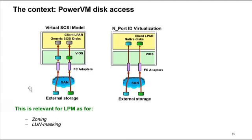NPIV virtualization actually does a pass-through. We zone the client worldwide port number — which is at the actual client LPAR, created in the profile — and the disk gets passed all the way through to the client LPAR, with no handling of that disk by the VIO servers. vSCSI has a bit more CPU overhead because the VIO server is handling all that IO, versus NPIV which has a pass-through mechanism. However, with NPIV, you are required to use a SAN switch and that SAN switch has to be NPIV enabled. The way you do zoning and LUN masking — which I also call mapping — is very important.